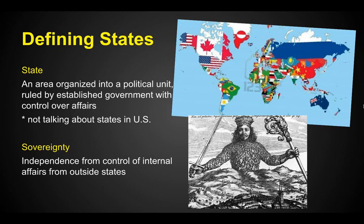Defining states. We look around the world and we see all these nations or countries, and they're also called states. A state is an area organized into a political unit, ruled by an established government with control over its affairs. We're not talking about U.S. states, because those are part of the United States of America. Countries are also called states, and they have sovereignty — independence from control of internal affairs by outside states. Sovereignty means we're in charge; no one tells us what to do in our house.